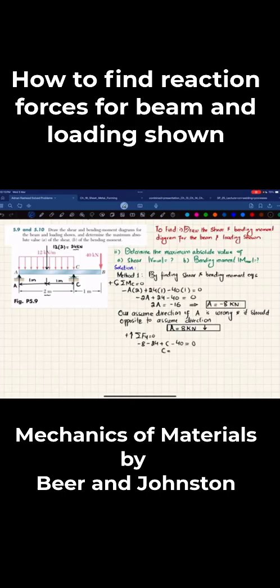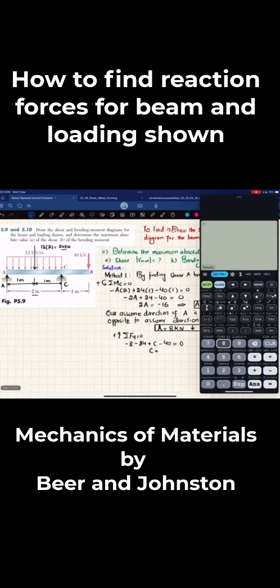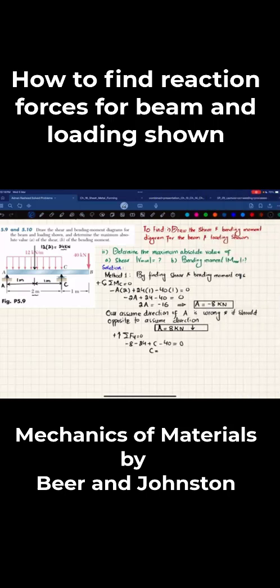So from here you will get C will be equal to, let me calculate it, minus 8 minus 24 minus 40 and that will give you 72. So C is equal to 72 kN. So it is positive, so it means that our assumed direction that C is taken up is correct.